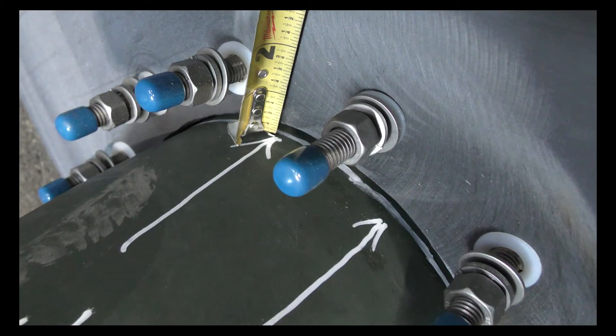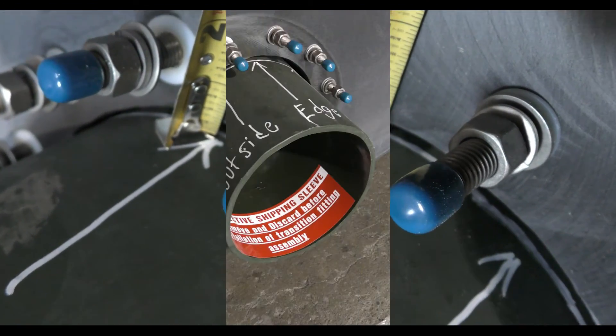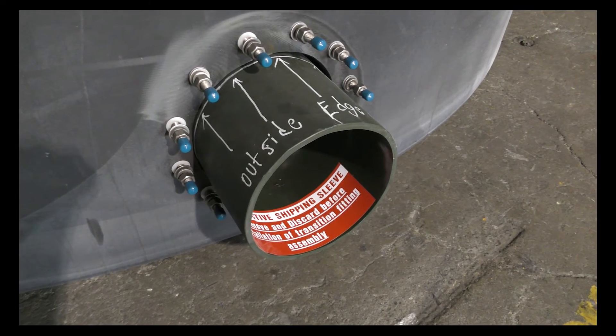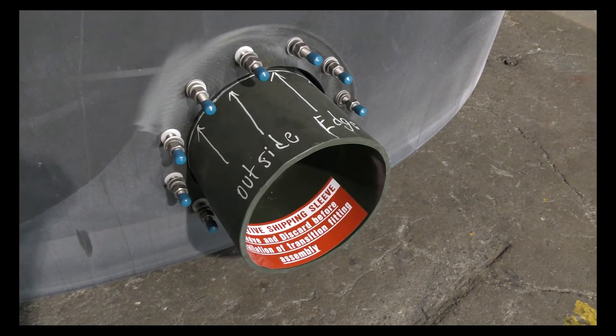After alignment is confirmed and the alignment sleeve is centered, you are ready to move on to step two, which is installing the rest of the transition fitting.